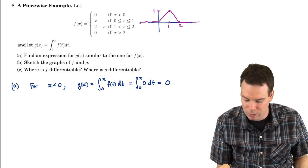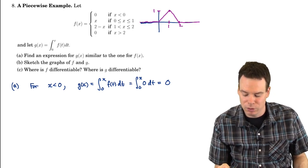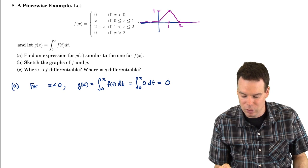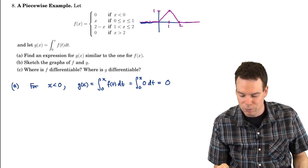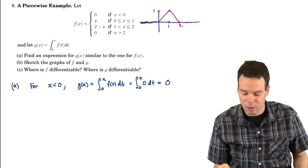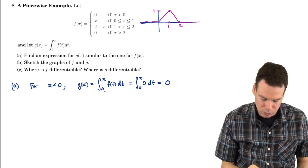And that makes sense because if we think about it, the function G is supposed to represent the area so far under the function F. But the function F is 0 here. So no matter what interval you're looking at over here from 0 to whatever value, it's got no height. So there's going to be 0 area.